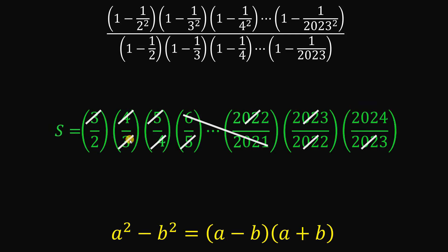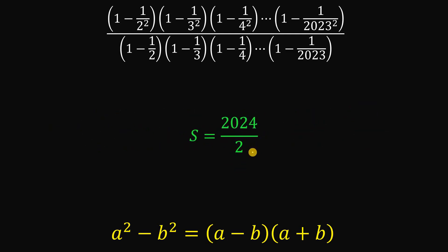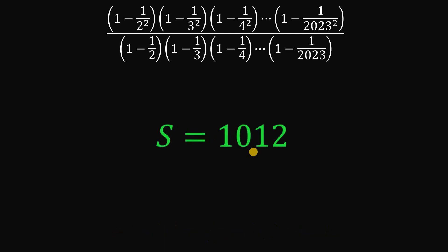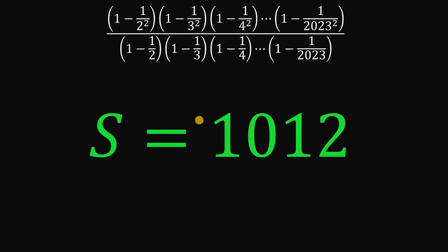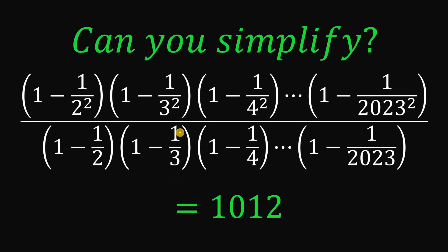So we have S equals 2024 over 2. And 2024 divided by 2 gives us 1012, and that is the value of S — the value of the expression we wanted to evaluate. Therefore, the simplest form of the expression 1 minus 1 over 2 squared, times 1 minus 1 over 3 squared, times 1 minus 1 over 4 squared, all the way to 1 minus 1 over 2023 squared, all over 1 minus 1 half times 1 minus 1 third times 1 minus 1 over 4, all the way to 1 minus 1 over 2023, is 1012. And as always, we are done.